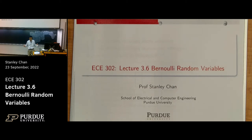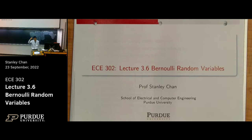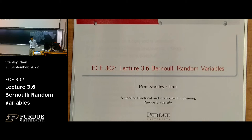This is more for open discussion — how can these random variables be used? You can bring up applications you have in mind and ask whether they would be classified into these random variables. There are four random variables we want to study: the Bernoulli random variable, the binomial random variable, geometric, and the Poisson. There are more, but these four are the representatives for an introductory class. Without further ado, let's talk about the Bernoulli random variable.